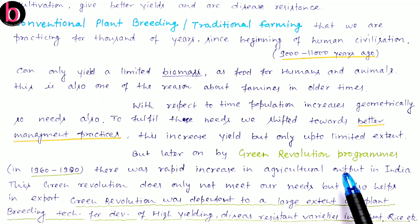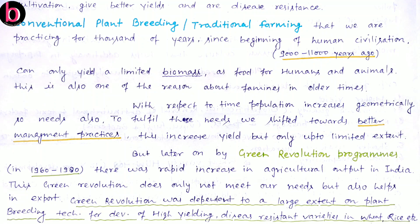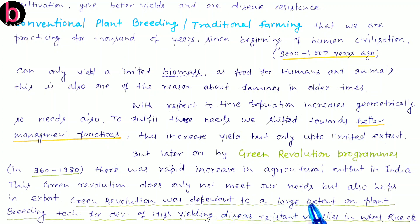Before the Green Revolution program, India was in a begging condition — meaning maximum grains were actually imported from other countries. But after the Green Revolution program, India became self-dependent. The Green Revolution not only met our needs but also helped in export. It was dependent to a large extent on plant breeding techniques for the development of high-yielding, disease-resistant varieties in wheat, rice, and maize.